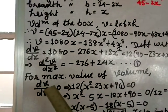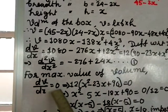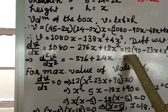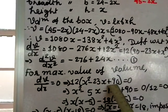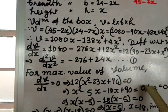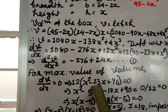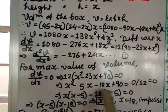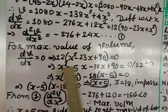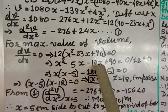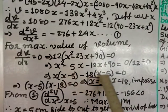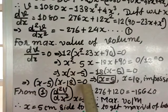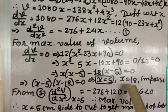Setting dV/dx = 0: 12(x squared minus 23x + 90) = 0, so x squared minus 23x + 90 = 0. Splitting the middle term: 18 times 5 is 90 and 18 plus 5 is 23. Factoring gives (x minus 5)(x minus 18) = 0.